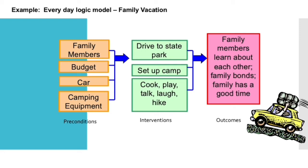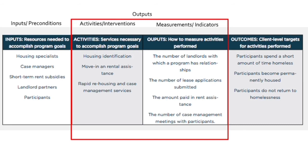Here's an example of a project I worked on for the Rapid Rehousing program. Notice that you can call the elements inputs or preconditions, activities or interventions, measurements or indicators, and then outcomes. Different authors may name these differently, so the Anderson reading might differ slightly from this example. Looking at the first line: the precondition is that we need housing specialists to be part of this program, and the activity is what interventions these housing specialists will do — specifically, they will identify housing.